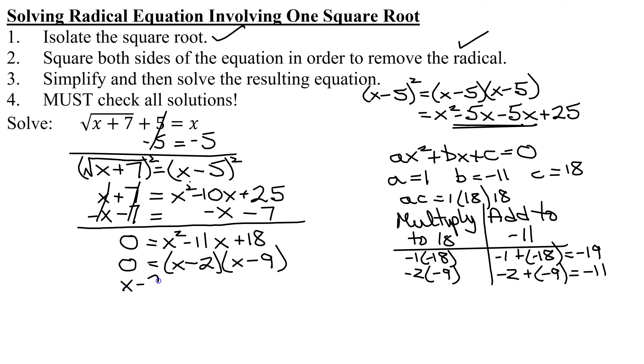Two factors multiplied together equals 0. Set each of them equal to 0. So x minus 2 equals 0, or x minus 9 equals 0. And adding 2 to both sides of this one, I get x equals positive 2. And adding 9 to both sides of this one gives me x equals positive 9.